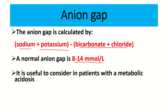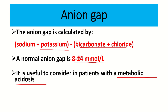The anion gap is useful to consider in patients with metabolic acidosis. In metabolic acidosis, the anion gap is altered from the normal range of 8 to 14. These four ions — sodium, potassium, chloride, and bicarbonate — are all components of the serum electrolyte, making it easy to measure the anion gap by investigating the serum electrolyte.